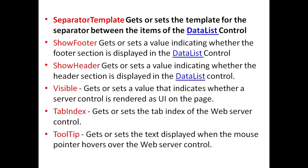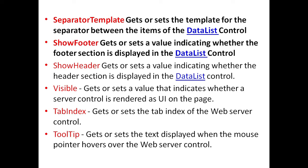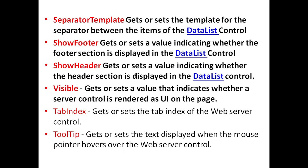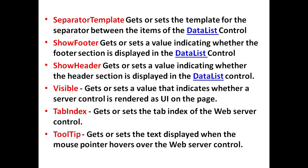Additional properties include: SeparatorTemplate, to get or set the template for the separator between items; ShowFooter, to get or set whether the footer section is displayed; ShowHeader, to get or set whether the header section is displayed; Visible, to get or set whether the server control is rendered as UI on the page; TabIndex, to get or set the tab index; and Tooltip, to get or set the text displayed when the mouse pointer hovers over the control.